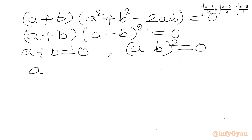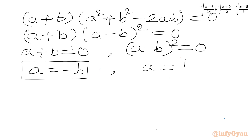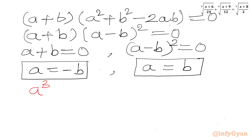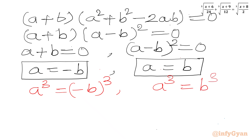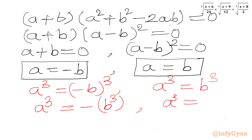From the product-zero rule, either A+B equals 0 or (A−B)² equals 0. So from the first equation A equals minus B, and from the second equation A equals B. Cubing both sides: A³ equals minus B³ for the first case, and A³ equals B³ for the second case.